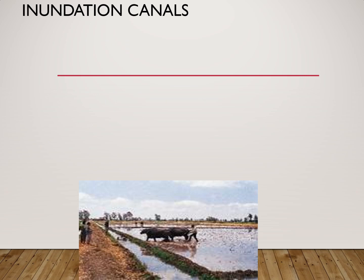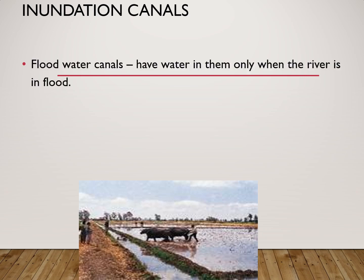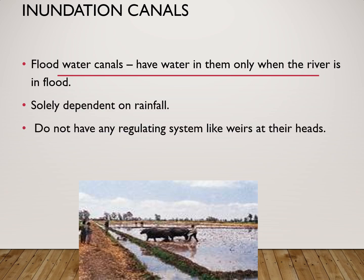Inundation canals, as you can see in this picture, are canals dug from the river that carry water to the field. The farmer ploughs in the field and there is a straight line — the canal — which makes the water reach the farms. These canals are also known as flood water canals. They have water in them only when the river is in flood, so if the river does not flood these canals would not have water. These canals are solely dependent on rainfall.